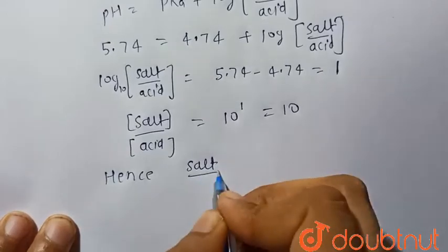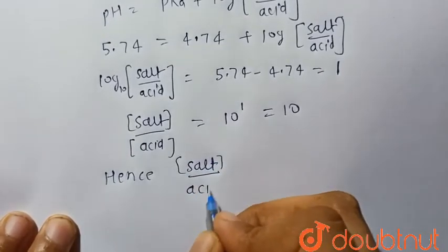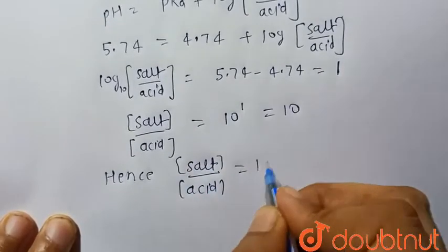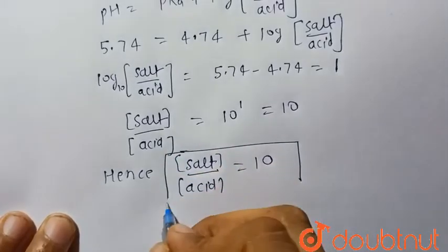Hence, the ratio of salt upon acid, that is concentration of salt upon acid, is equal to 10, which is our final answer.